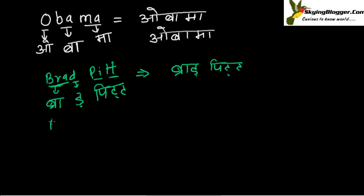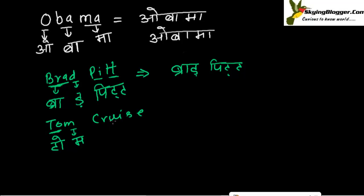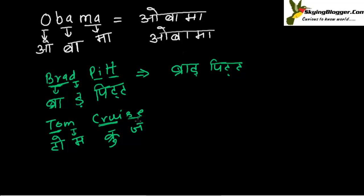Now I am writing another name — Tom Cruise. 'Ta' plus 'o' makes 'to,' and then 'ma' gives us 'Tom.' For 'Cruise,' it's 'kra' to make 'crew,' and since the 'se' is pronounced as 'ja,' we write 'cruise' as 'crew-ja.' So Tom Cruise in Hindi.